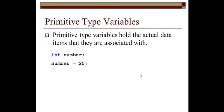Primitive data type variables hold the actual data items that they're associated with. For instance, if I say int number, a memory cell large enough to hold a number is allocated. So an int is four bytes, so four bytes is allocated for a number, and I'm calling that memory cell number. When I say number equals 25, the 25 then goes in that memory cell. So that's for all primitive data types. All primitive data types hold the actual data items that they're associated with.